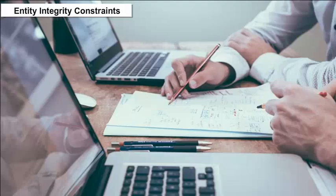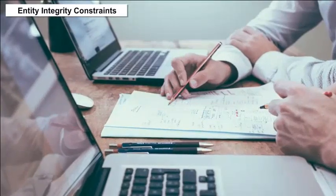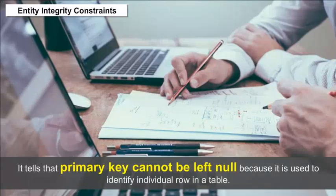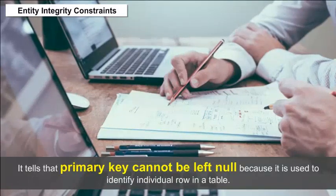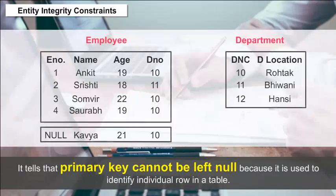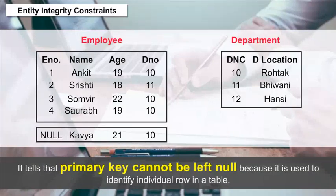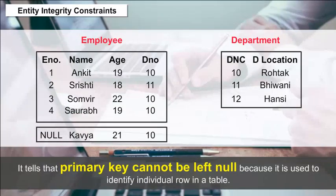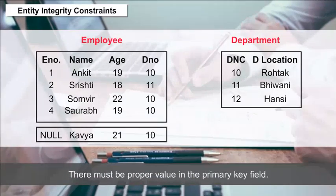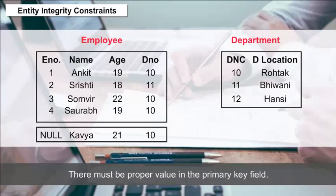Entity Integrity Constraints — it states that the primary key cannot be left null because it is used to identify individual rows in a table. There must be a proper value in the primary key field.